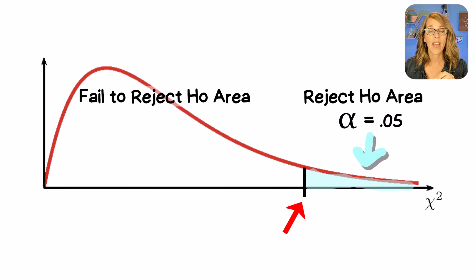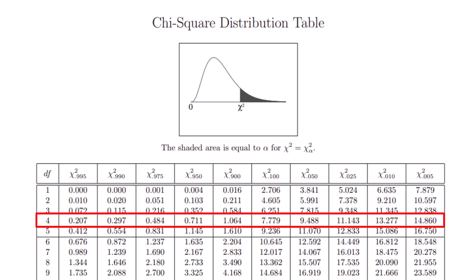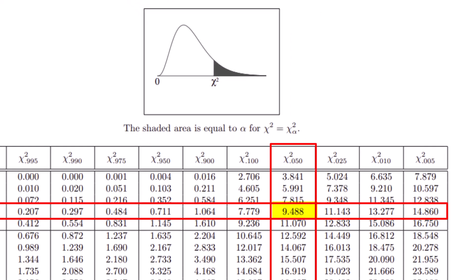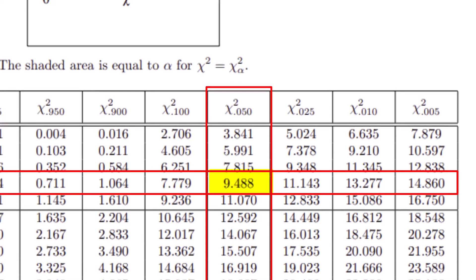To find the chi-square value, that critical chi-square that cuts off this rejection region, we can find it here in this table. Using four degrees of freedom and alpha equals 0.05, we find that our critical chi-square is 9.488.